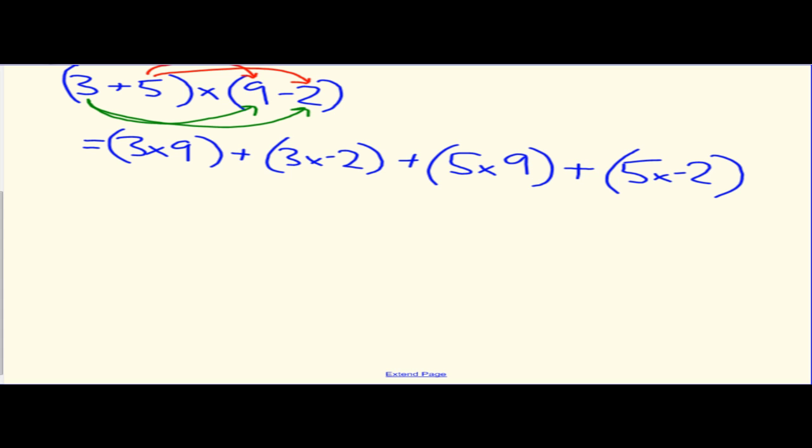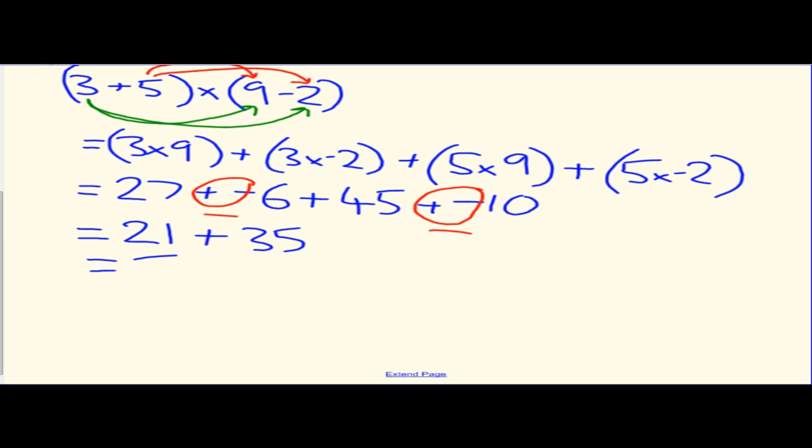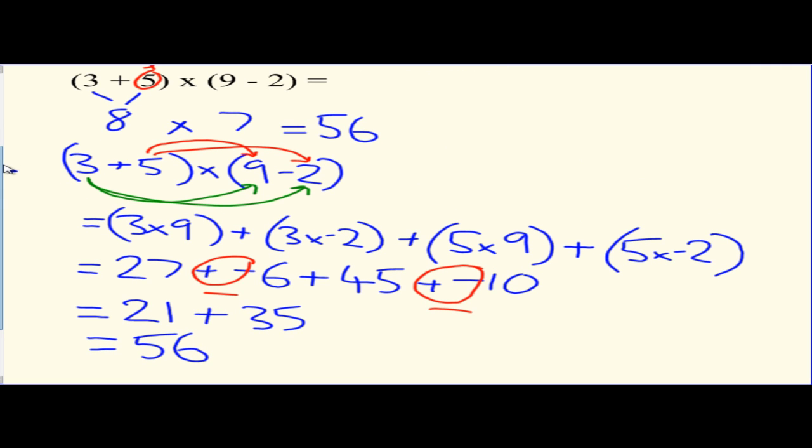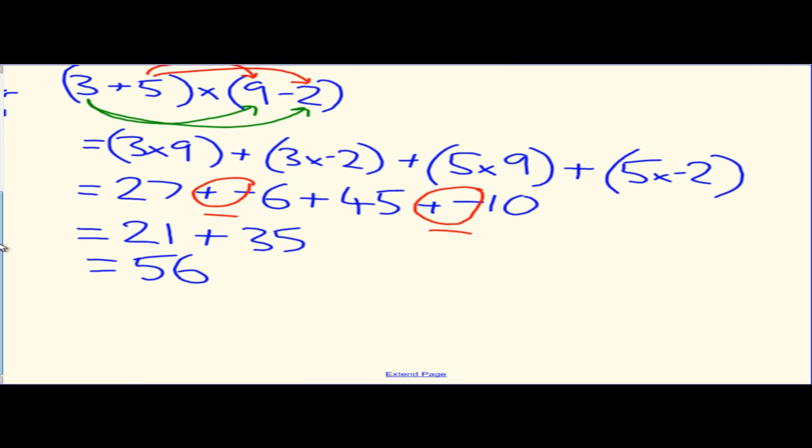That's all rather long now. Let's simplify it down. 3 times 9 is 27. 3 times negative 2 is negative 6. 5 times 9 is 45 plus 5 times negative 2 gives us negative 10. So, what we have here, using positive and a negative makes a negative, 27 minus 6 gives you 21 plus 45 minus 10 gives you 35. 21 and 35 give you 56. That's the same answer as we got above by just multiplying the two numbers together. So, we know this method works.